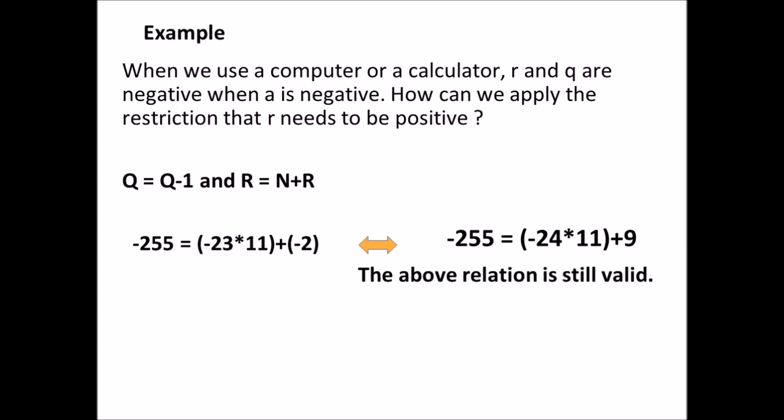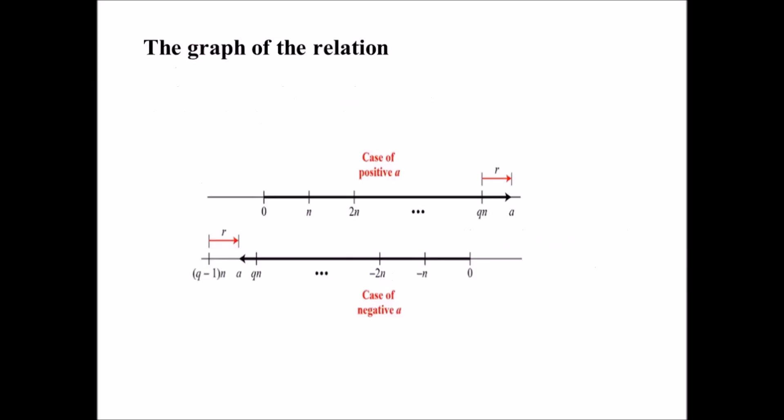We can show the relation A equals Q times N plus R, with the two restrictions on N and R, using two graphs. The first one shows the case when A is positive, the second when A is negative. Starting from 0, the graph shows how we can reach the point representing the integer A on the line. In the case of positive A, we need to move Q times N units to the right and then move extra R units in the same direction. In the case of negative A, we need to move Q minus 1 times N units to the left, and then move R units in the opposite direction. You can observe that in both cases R is positive.